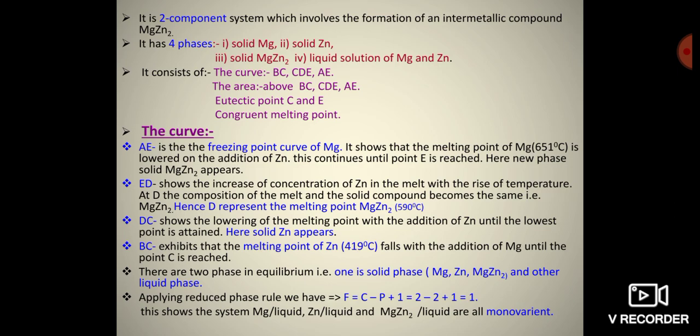Curve AE is the freezing point curve of magnesium. It shows that the melting point of magnesium, 650°C, is lowered on the addition of zinc. This continues until point E is reached, where the new phase of solid MgZn₂ appears.